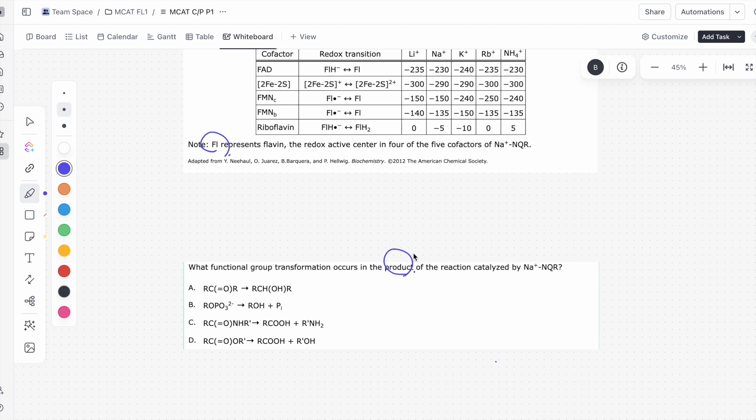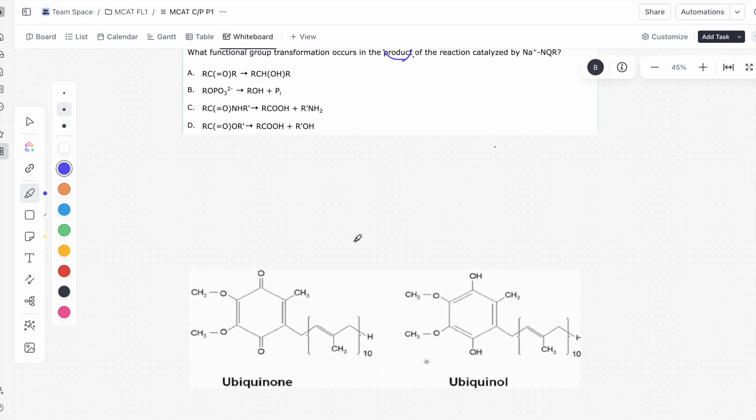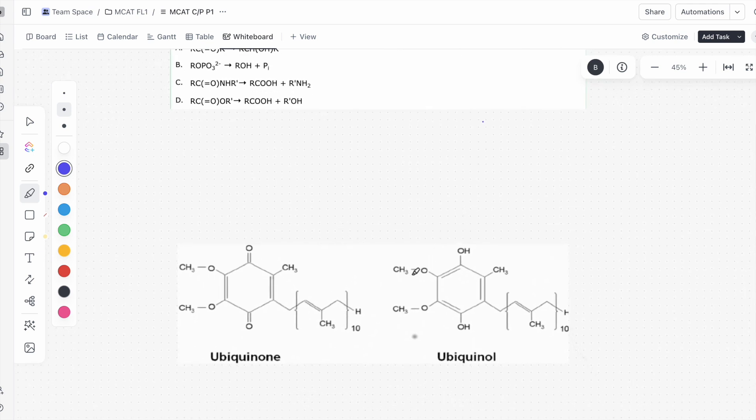So the product is the ubiquinone. And what actually happens is the ubiquinone becomes a ubiquinol when it takes on those two electrons. And because I can't really draw ubiquinone, I actually decided to steal a picture off the internet. And what you notice between ubiquinone and ubiquinol are these two groups right here. You'll see that the ketone essentially becomes an alcohol, right, or these hydroxyl groups.